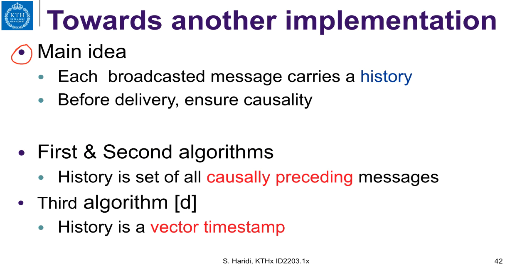Here is the main idea. Each broadcasted message carries a history, and before delivery we ensure causality. The first and second algorithms were based on a history that is the set of all causally preceding messages. The algorithm we are going to show now is based on vector timestamps, or vector clocks. When you deliver a message, the message carries with it a vector clock that tells about the number of deliveries that happened before that message on each process. The idea is to make sure that messages indicated in the vector clock have been delivered before you deliver that message.